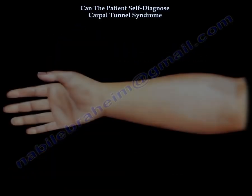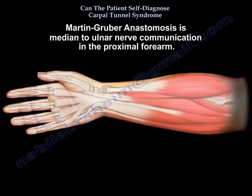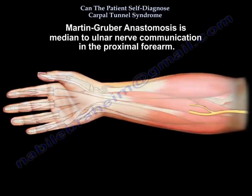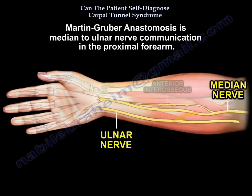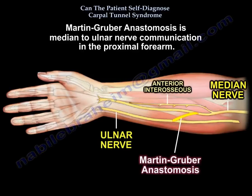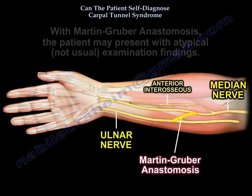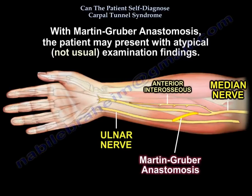Martin-Gruber Anastomosis is a median-to-ulnar nerve communication in the proximal forearm. The patient may present with atypical exam findings.